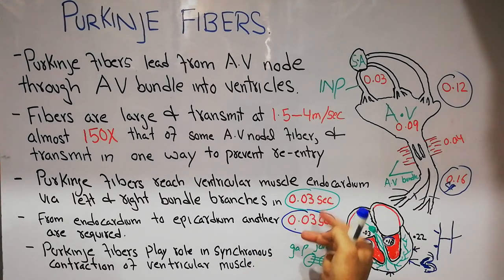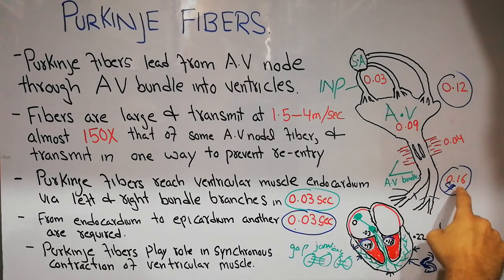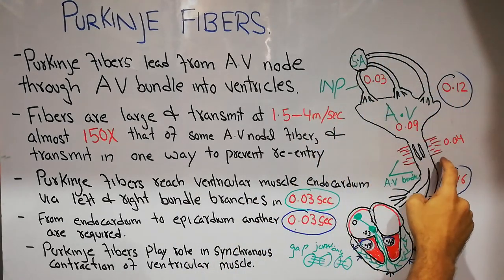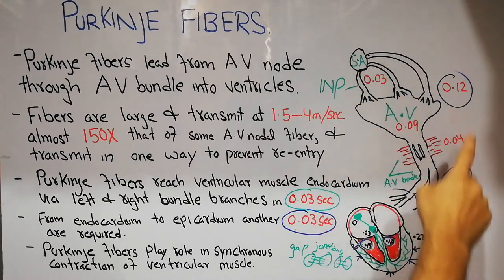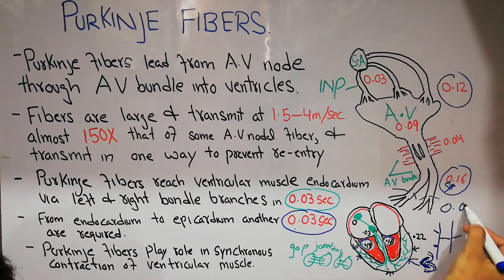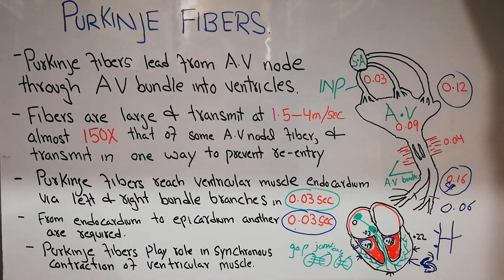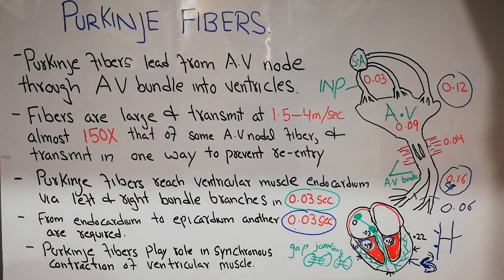So 0.03 plus 0.03 equals 0.06 seconds total to depolarize the entire ventricular muscle. Meanwhile, 0.16 seconds were required for the impulse to reach from the SA node to the distal AV bundle, but only 0.06 seconds were required to depolarize the entire ventricular muscle from inside to outside. This was because of the speed of the Purkinje fibers, their large size, and the abundance of gap junctions in their cells.